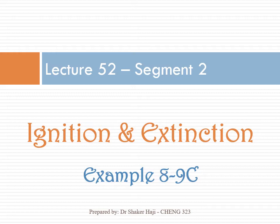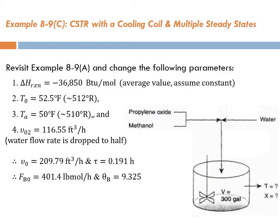Welcome back to Lecture 52, Segment 2, where we are still in the tutorial solving Example 89C to understand more about ignition and extinction. You are really familiar with Example 89C — this is similar to Example 89A, except that we had made some changes. We have a CSTR with a cooling coil and multiple steady states.